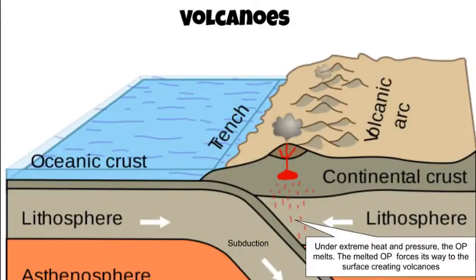Where an oceanic plate and continental plate converge, they also create volcanoes. As the more dense oceanic plate subducts under the less dense continental plate, it is driven down into the hot mantle. The oceanic plate is melted due to extreme heat and pressure. As we have learned, when liquids or gases are heated they rise, so as the plate melts, the molten rock rises up and forces its way to the surface, creating volcanoes.